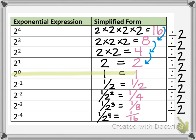Notice the symmetry in this table: 2 to the fourth power gave 16, and 2 to the negative fourth power gives 1 over 16. You don't get a negative answer — you get the reciprocal of what you had for the positive exponent. So 2 to the fourth power is 16, and 2 to the negative fourth power is 1 over 16.